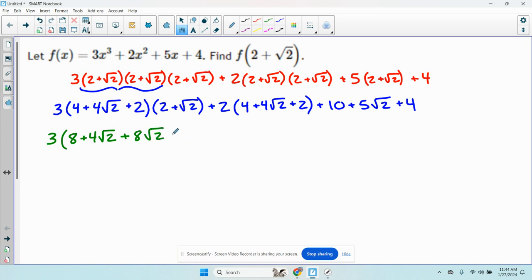4 root 2 times root 2. This root 2 times root 2 is 2. Times 4 is 8. And now the last one. 2 times root 2 is 4. 2 times root 2 is 2 root 2.